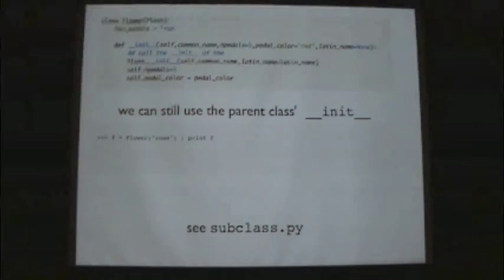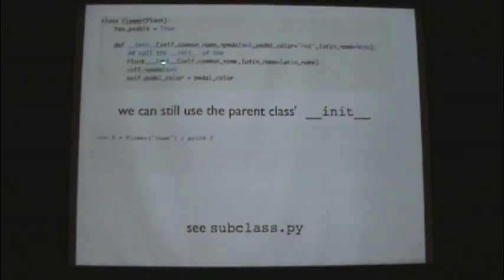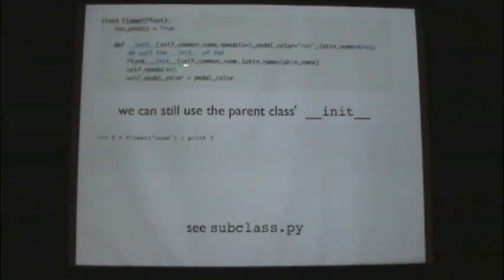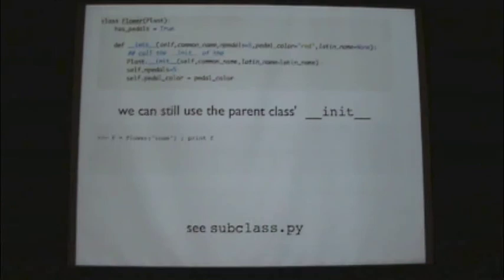Some of this is in subclass.py. If you really want to run the `__init__` of the base class from within the subclass `__init__`, you simply call it explicitly and pass `self`. This is one of the few times you actually pass the word `self` when calling a function — you're passing it back up to the base class. So you can still use the parent's `__init__`. `f = Flower('rows')` — print `f`, then `f.n_petals` is five because that was part of the `__init__`.